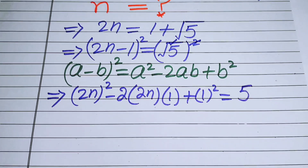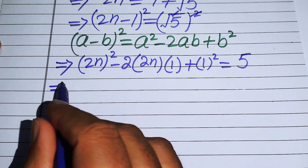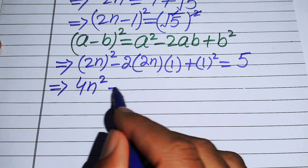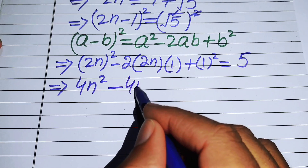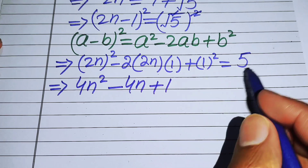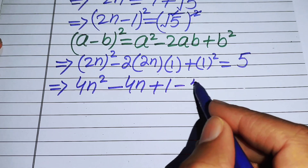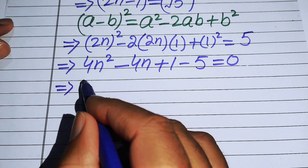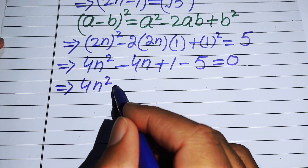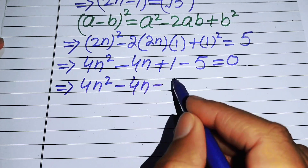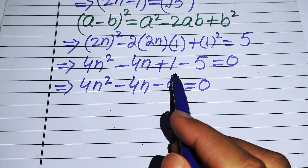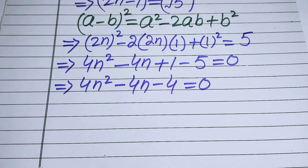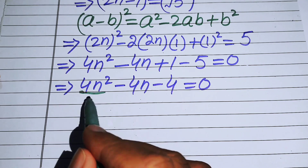The square roots cancel and we get 5 on the right. Expanding the left side gives 4n² - 4n + 1 = 5. Moving 5 to the left-hand side: 4n² - 4n + 1 - 5 = 0, which simplifies to 4n² - 4n - 4 = 0.